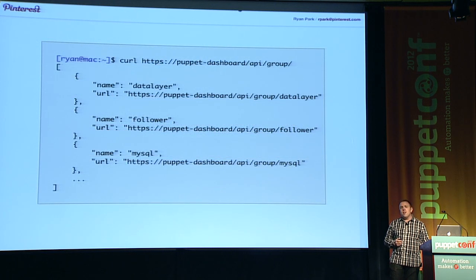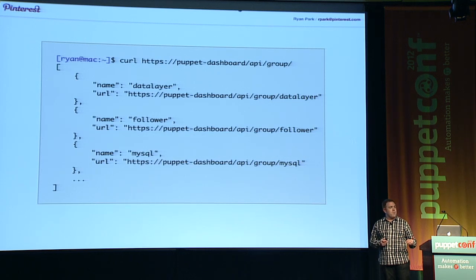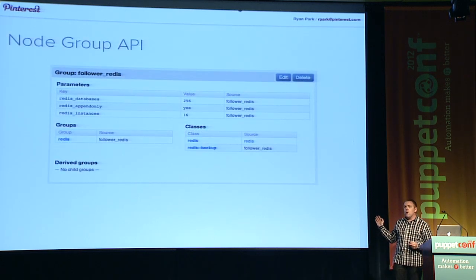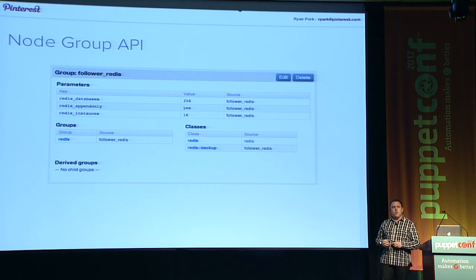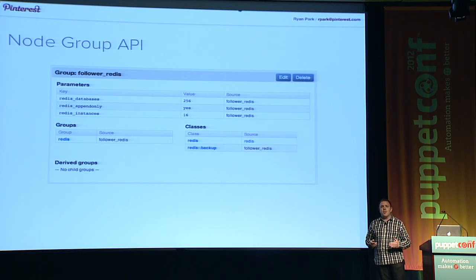Let's look at some examples of the data we serve from the API. This is a list of all the node groups defined in Puppet Dashboard — just a set of names and URLs to get more detailed data about what's in each group. Now let's look at how we represent one of those groups: a group called Follower Redis, which is a specific kind of cluster of Redis database servers. The group is derived from the more basic Redis group, and Puppet will install Redis and configure it based on the specific parameters defined.